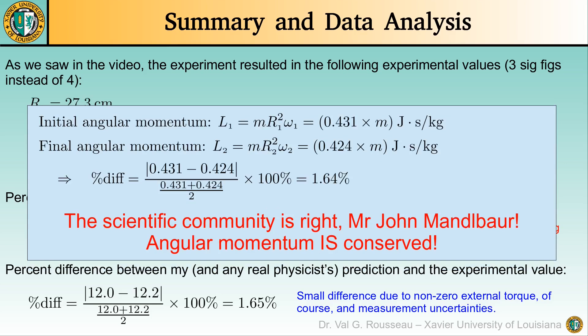On the other hand, the percent difference between the initial and final angular momentum is only 1.64 percent. The scientific community is right, Mr. John Mandelbauer. Your beloved experiment of a ball on a string supports the fact that angular momentum is conserved.